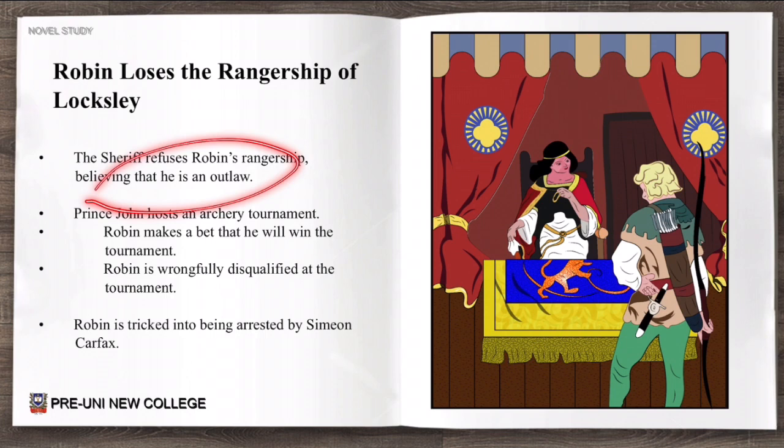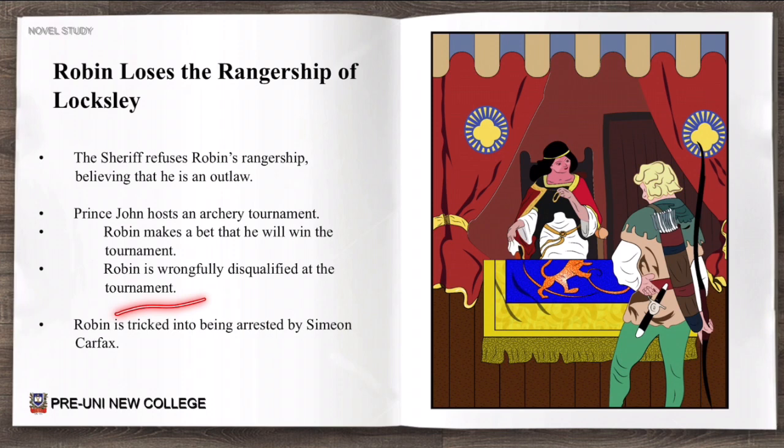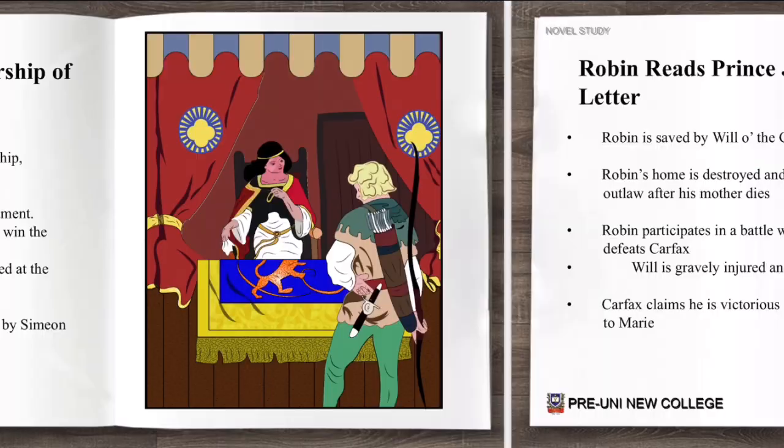Prince John then hosts an archery tournament, and Robin makes a bet that he will win. However, he is wrongfully disqualified at the tournament, so he cannot compete. Robin is then tricked into being arrested by Simeon Carfax.